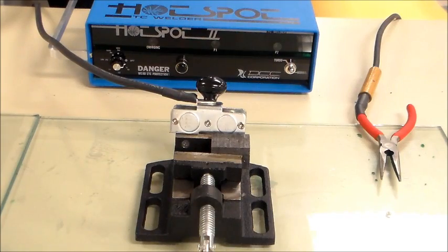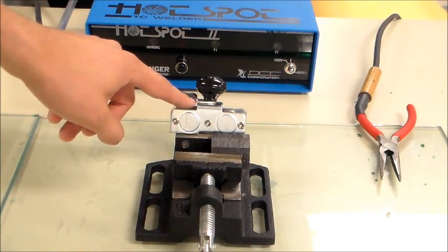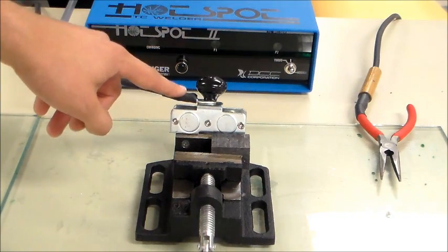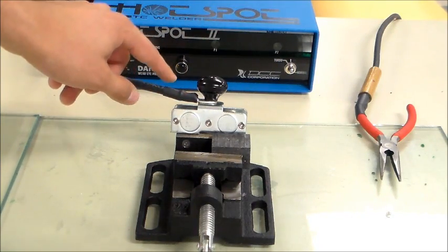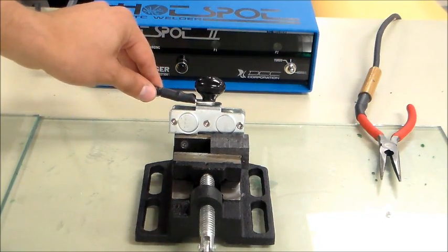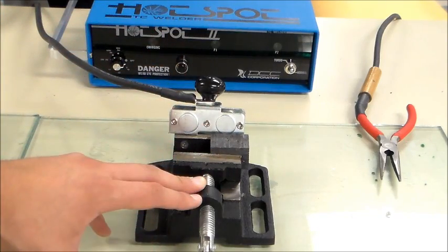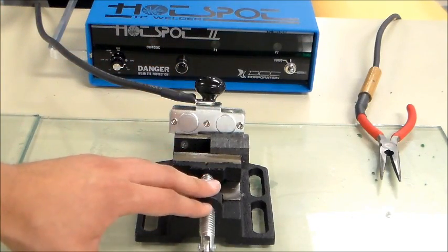Attach the magnet which is attached to the negative end of the welder to the drill press vise.